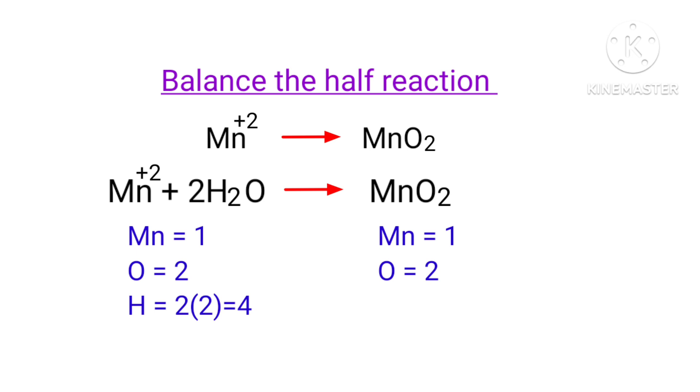Now we can balance the hydrogen atoms. To do this, you can produce H+ ions. Now the number of atoms are balanced on both sides.